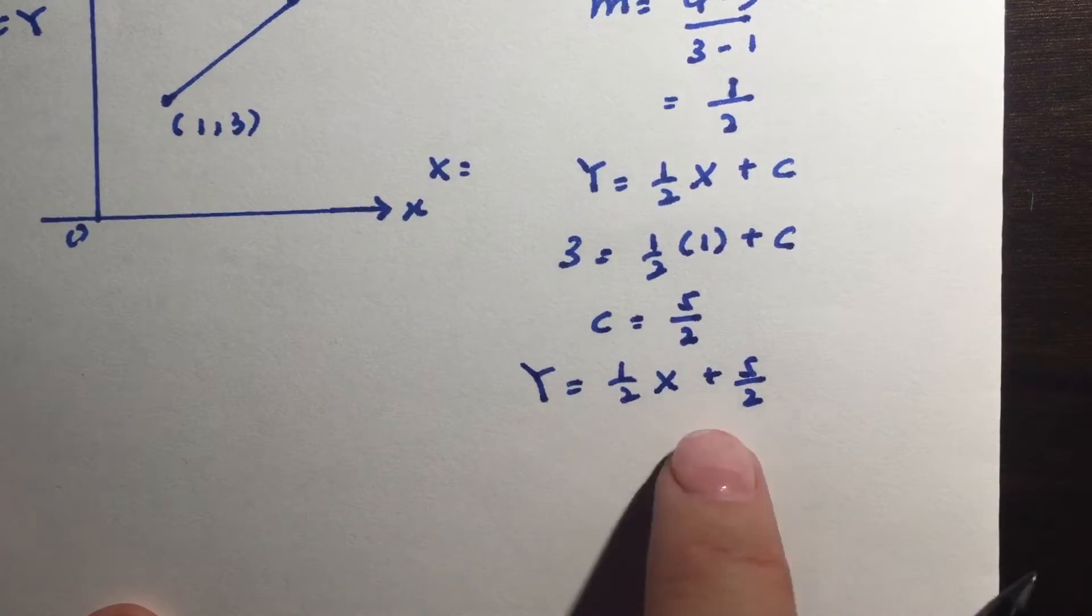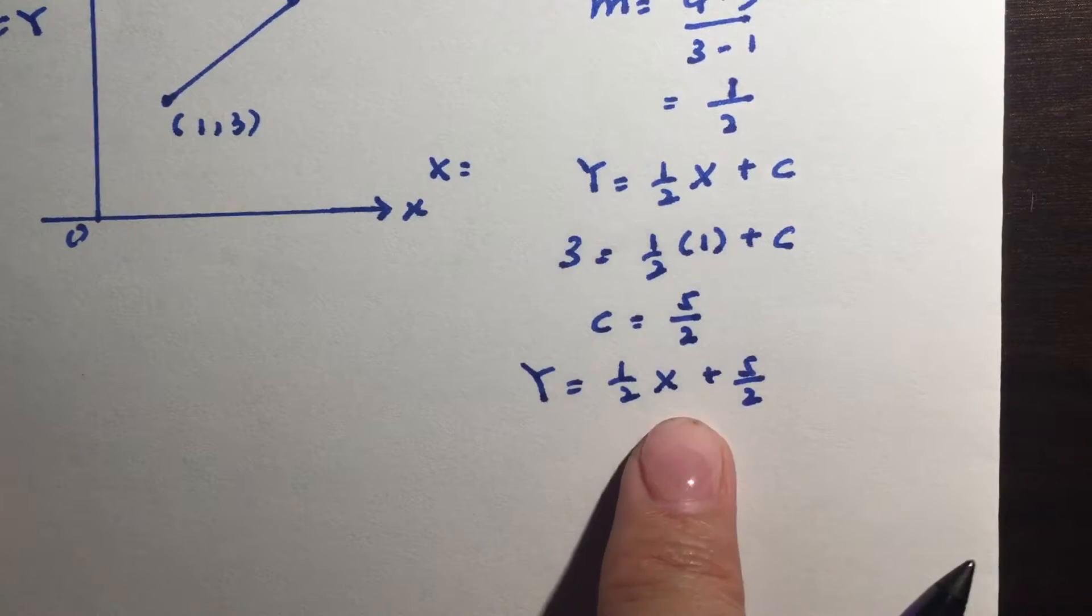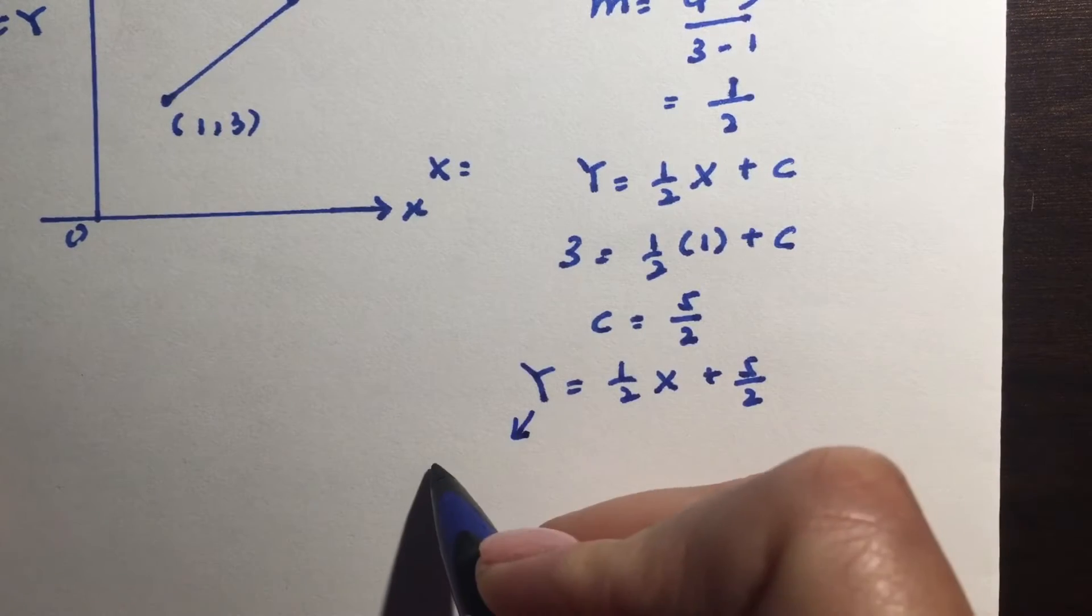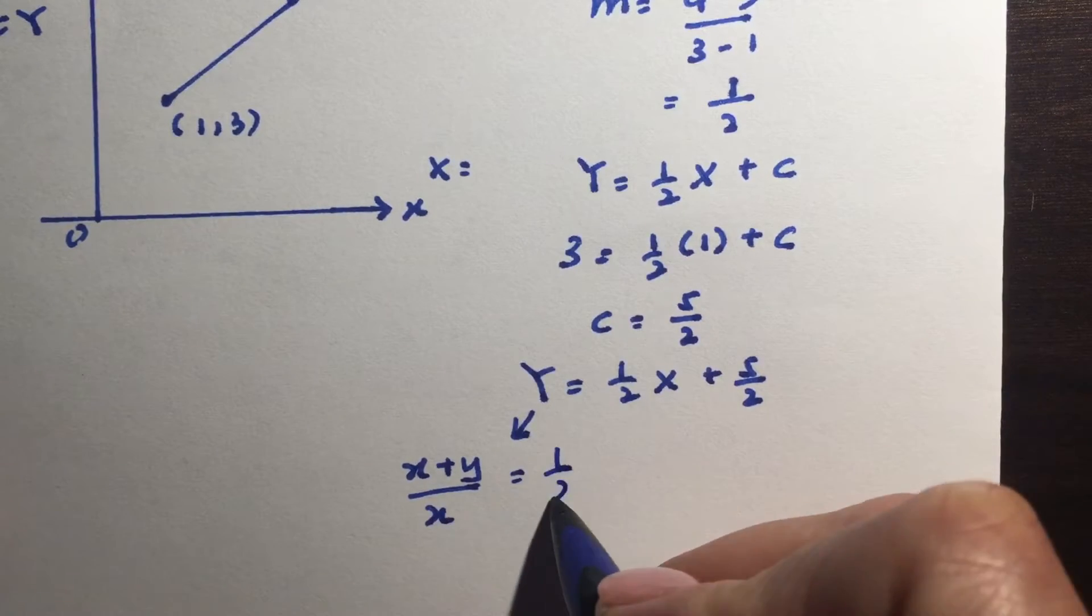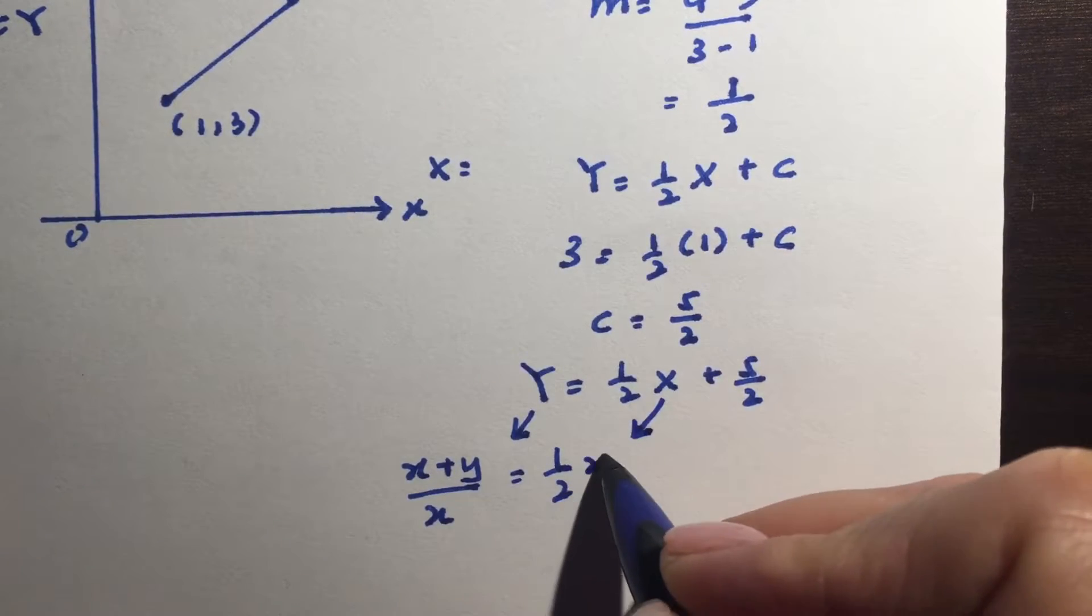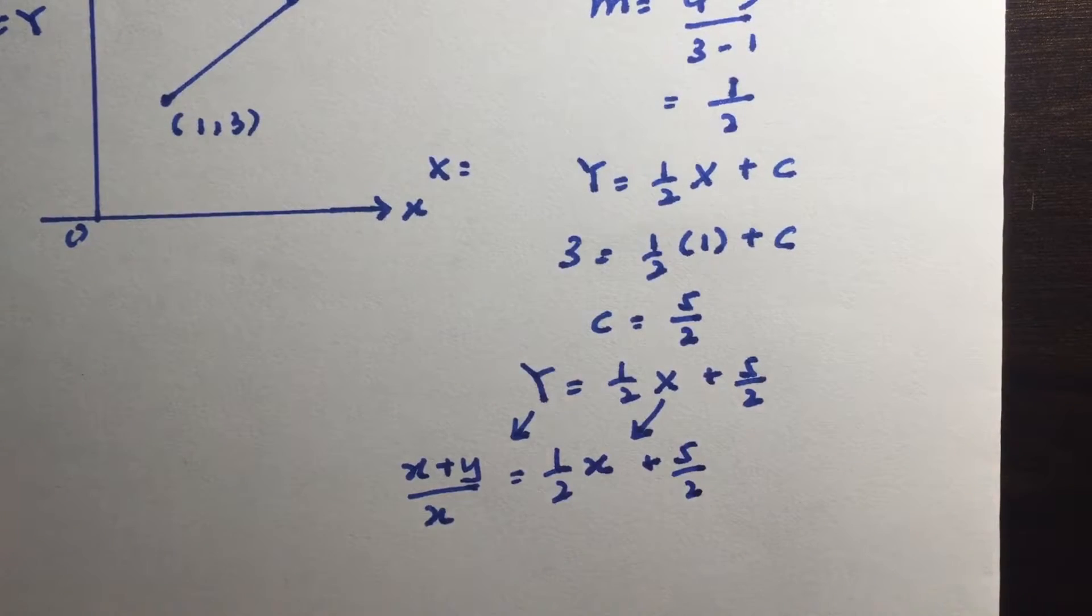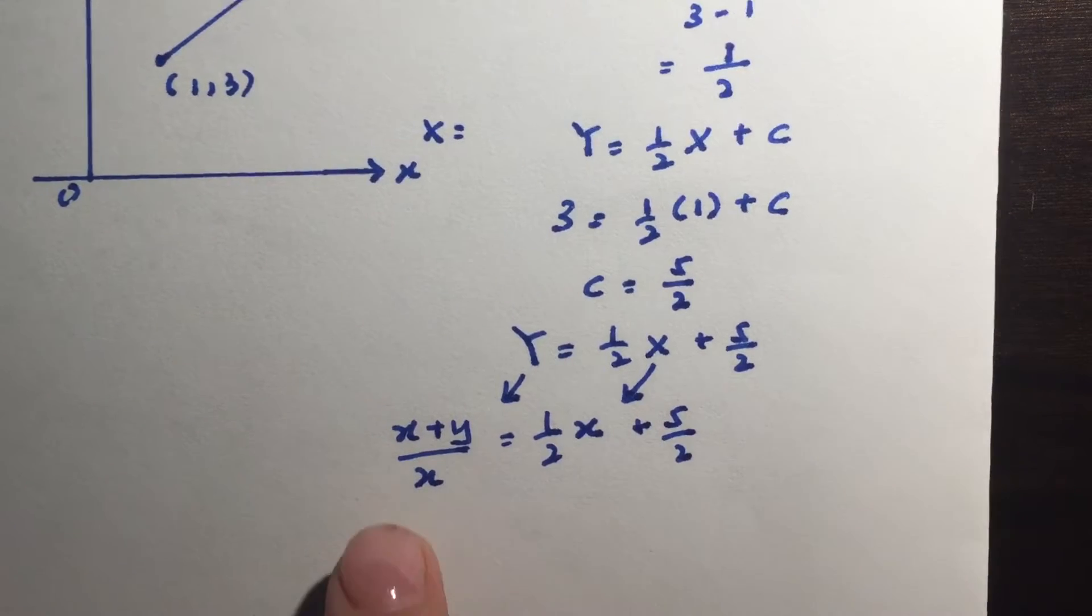Now this is where I will start replacing the big Y and big X. So big Y is the same as x plus y over x. Big X is actually just x and I have 5 over 2.